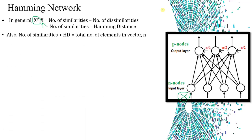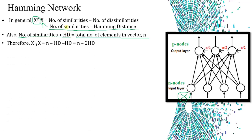The number of dissimilarities is the Hamming distance (HD). Number of similarities plus dissimilarities equals n, the total number of elements. Since Xi transpose times X equals similarities minus HD, and similarities equals n minus HD, substituting gives: Xi transpose times X equals n minus HD minus HD, which simplifies to n minus 2 times HD.